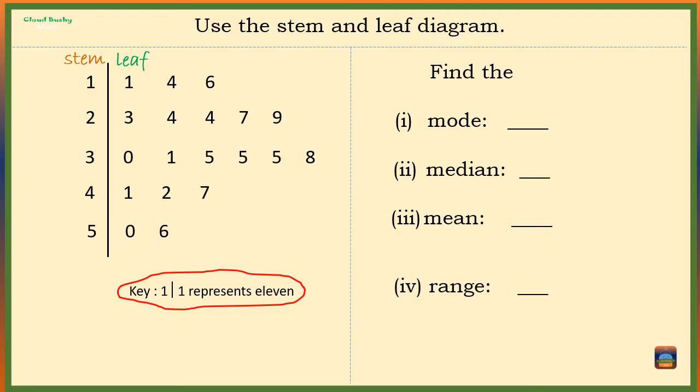So first we want to find the mode. The mode is the most frequent number, that is the number that repeats more often. A closer look at the stem and leaf diagram that we have, we can see that